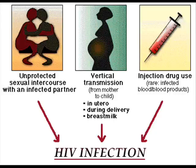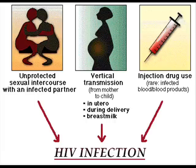The virus enters the body through three main methods. The first method of transfer, unprotected sex with an infected partner, is the most common of the three. Secondly, sharing sharp objects with an infected partner, most often through drug use or sharing of razors and other similar objects, can often lead to the transfer of the disease. Because the two most common methods of HIV transmission tend to be associated with poor or immoral behavior, the stigma surrounding HIV and infected victims is quite common in certain countries, and seemingly impossible to overcome. The third and least common method of transmission is vertical transmission, or transmission through breastfeeding or childbirth.